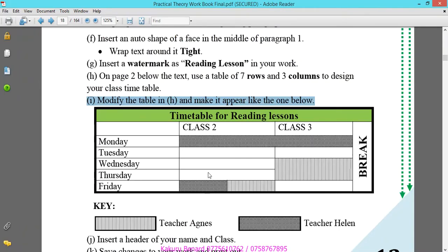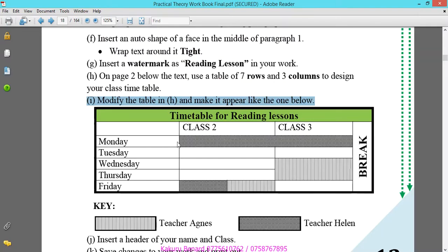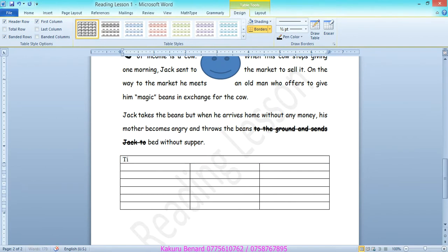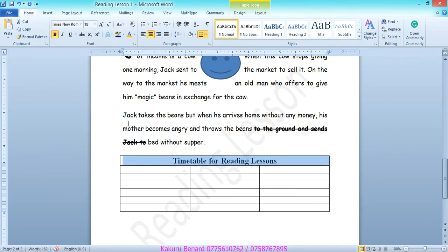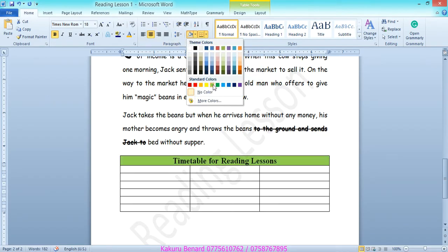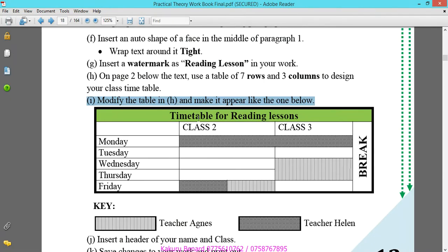This is the table they want our table to look like. We are going to highlight the top row, right click merge cells. After, write there the word timetable for reading lessons. Highlight it, go home tab, center, bold. You can increase font size maybe to 18. Then still in this same row you can come to shading and choose color like green. This makes it top row.